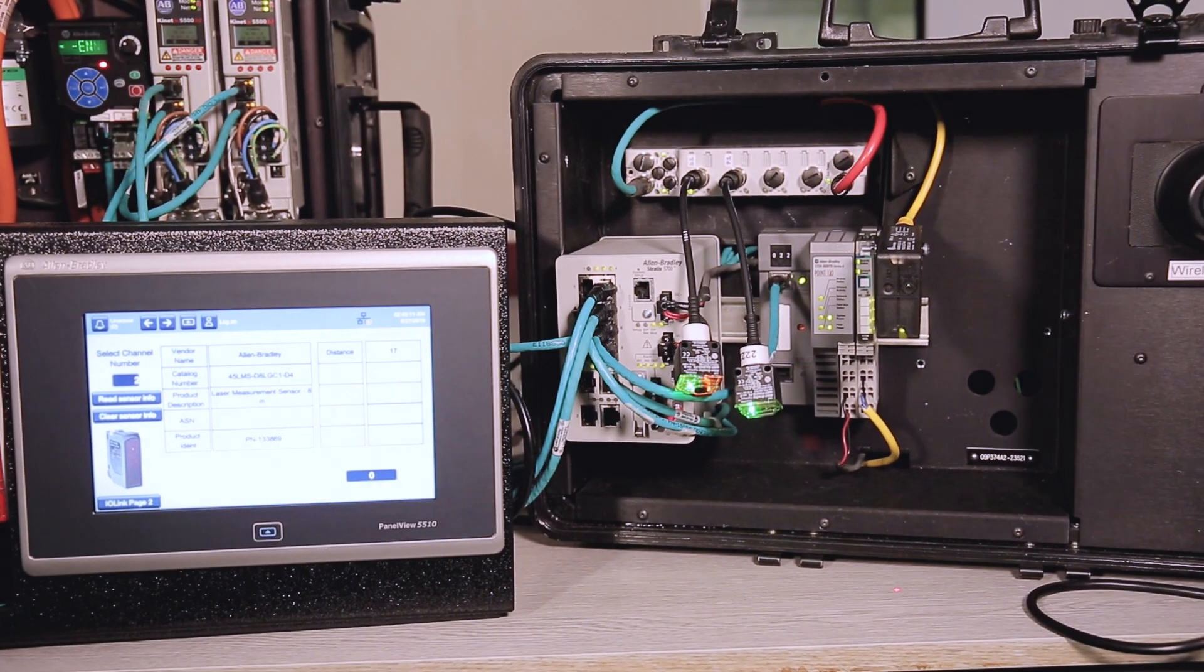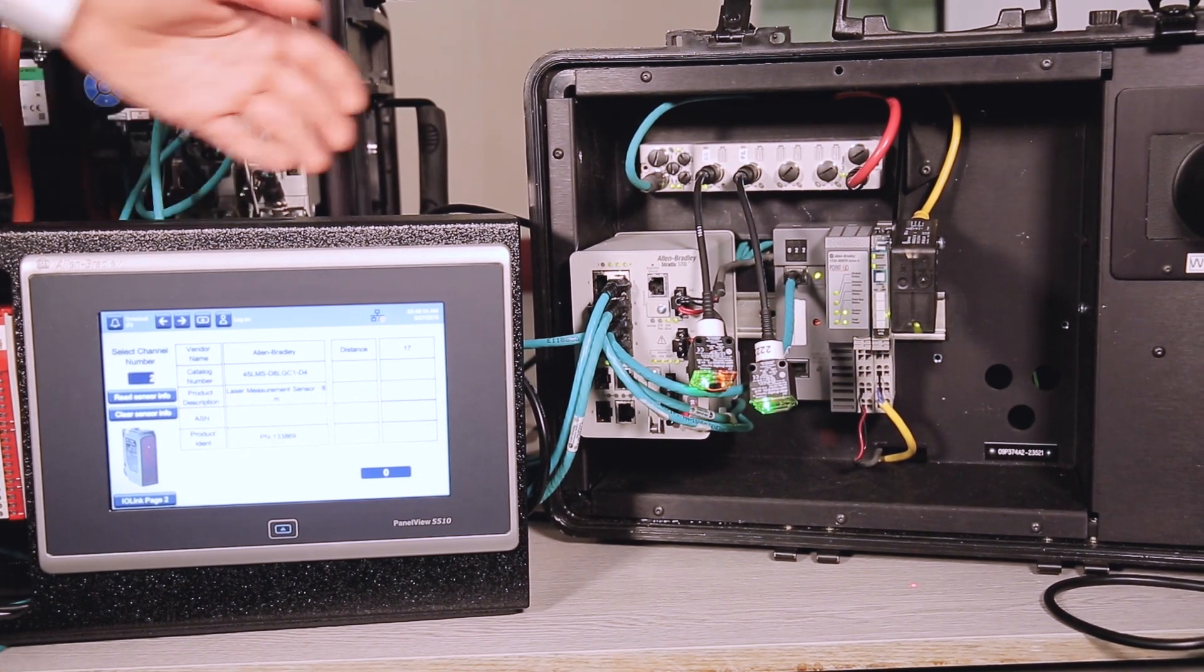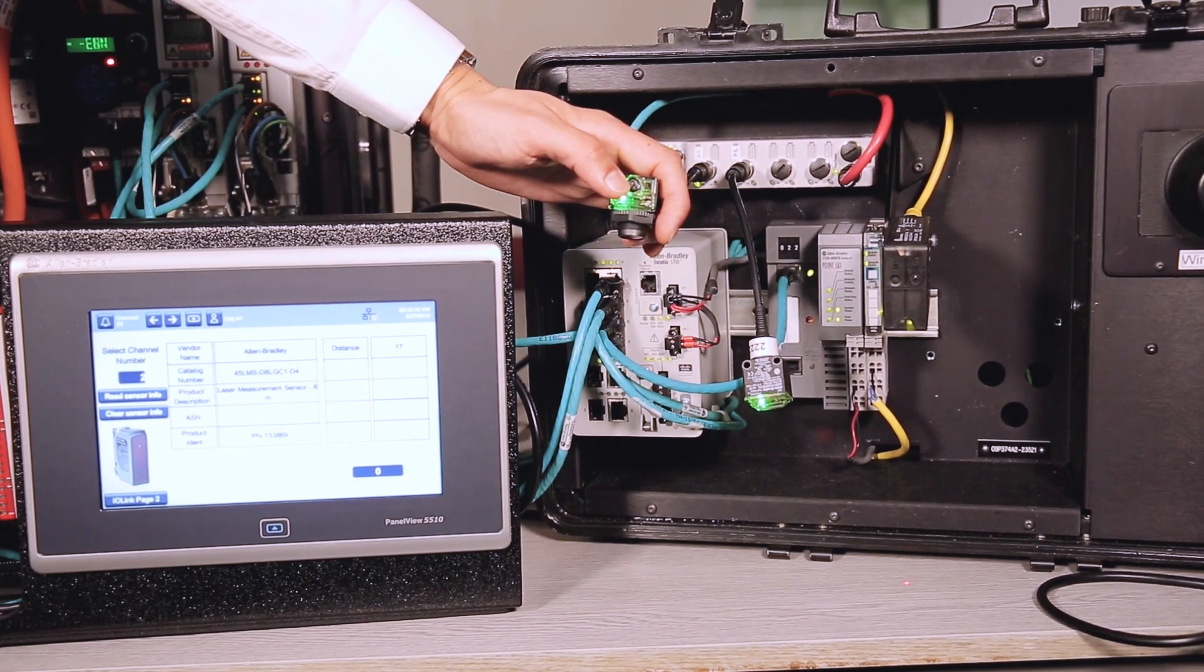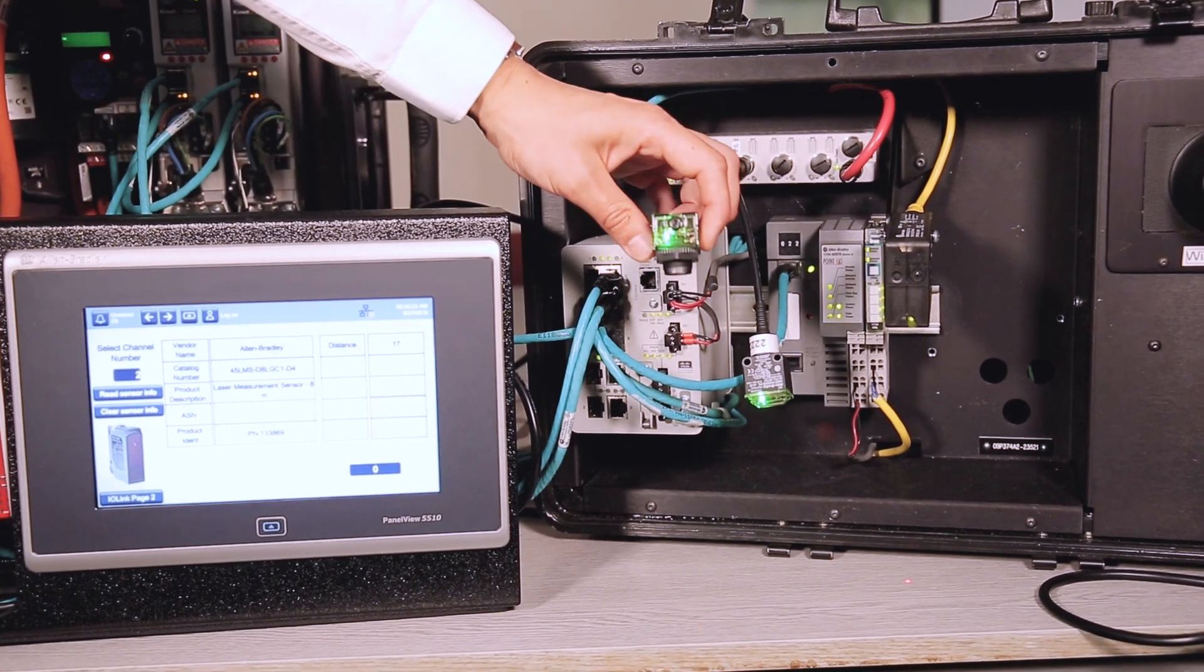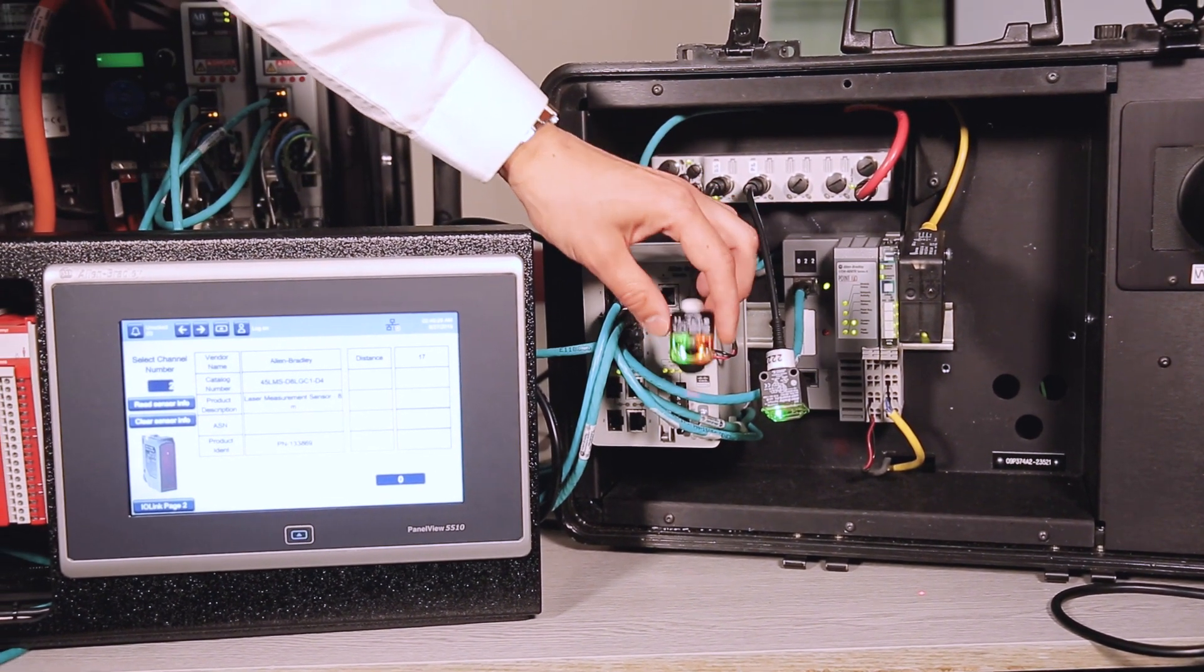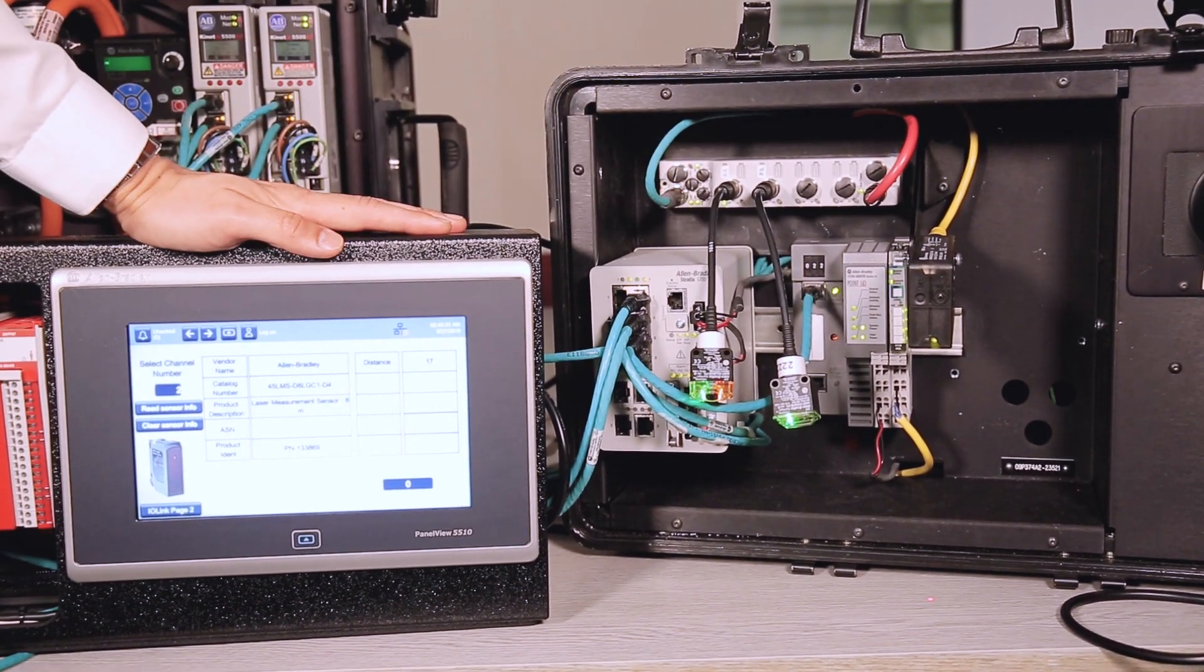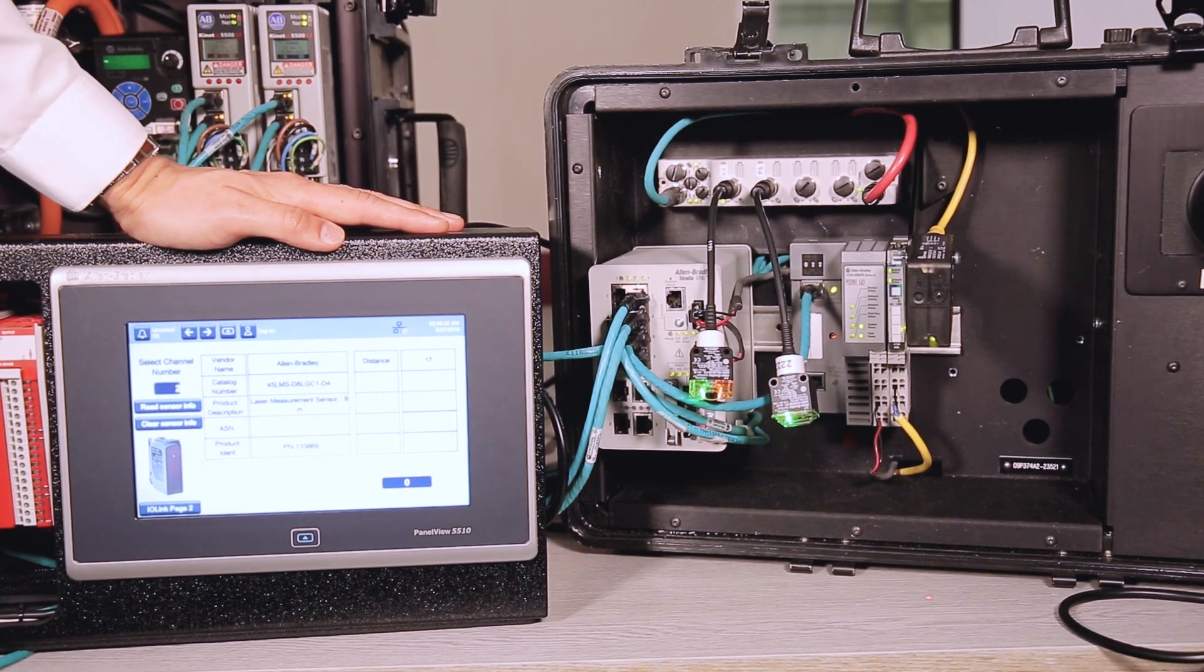Traditionally, sensors are a fairly simple product which are taught locally by the operator or the installer using a local adjuster or a teach button on the device. Obviously this can lead to issues with changeover times with product variants. So by using an IO-Link enabled sensor, you can get the full details and diagnostics out of a sensor, as well as sending remote teach and reteach functions.